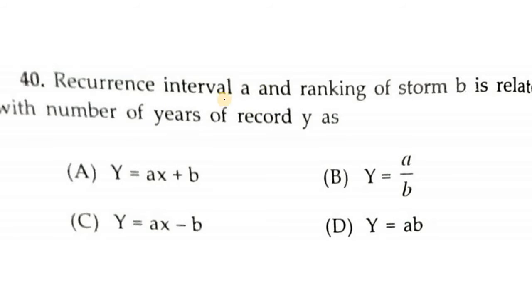Recurrence interval A and ranking of storm B is related with number of years Y. What is the formula? Recurrence interval A is given as number of years divided by the ranking of that storm, that is B. So Y can be expressed as A times B. Sometimes we take Y plus one, in that case Y equals AB minus one, but in these options there's no mention of one, so you can take D.